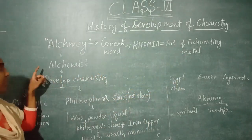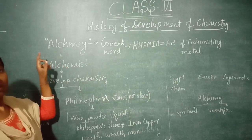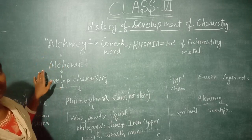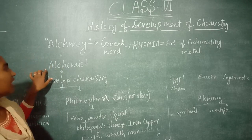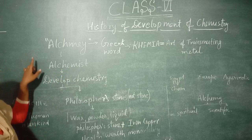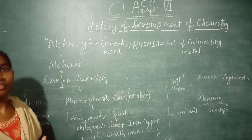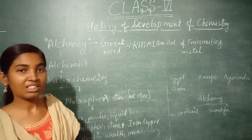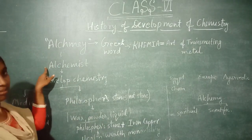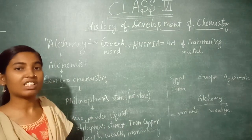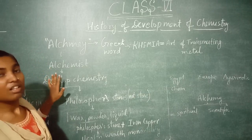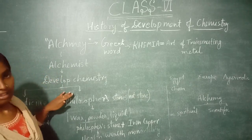Now let's see those who were studying this alchemy — those working under it as scientists. Those persons are known as alchemists, as they were doing the study of alchemy. Nowadays someone studying chemistry is known as a chemist, but at that time they were known as alchemists — those who were experimenting with chemicals.